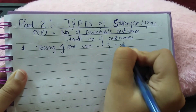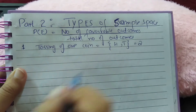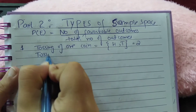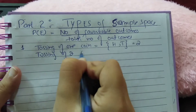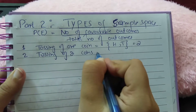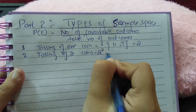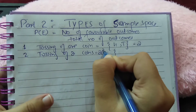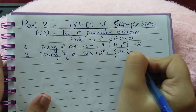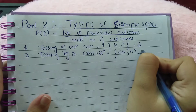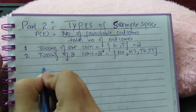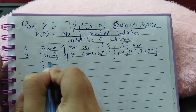Sample space number one: tossing of one coin. If we toss a coin, two results will be obtained — either head or tail. Tossing of two coins results in four outcomes, as two raised to the power two is four. Starting from two heads and decreasing: head-head, head-tail, tail-head, and tail-tail.